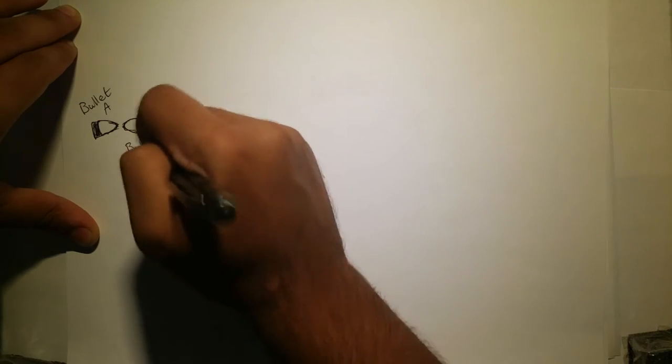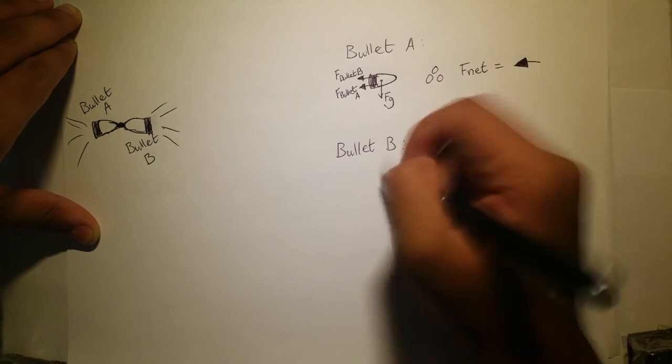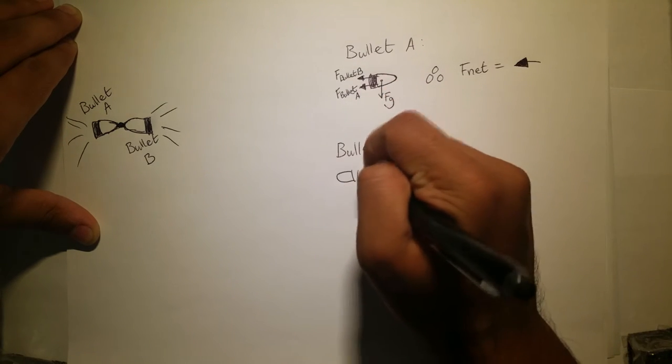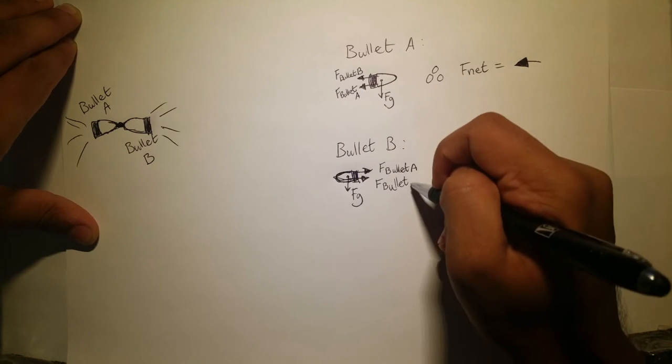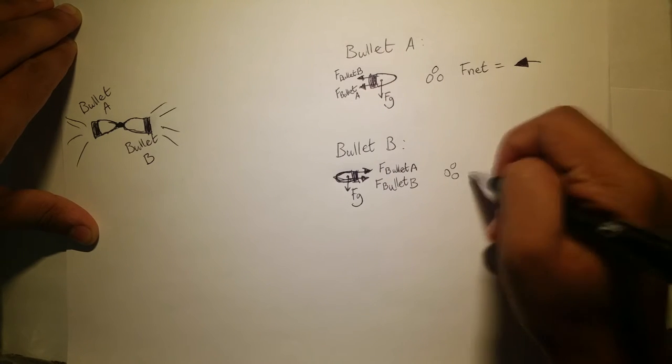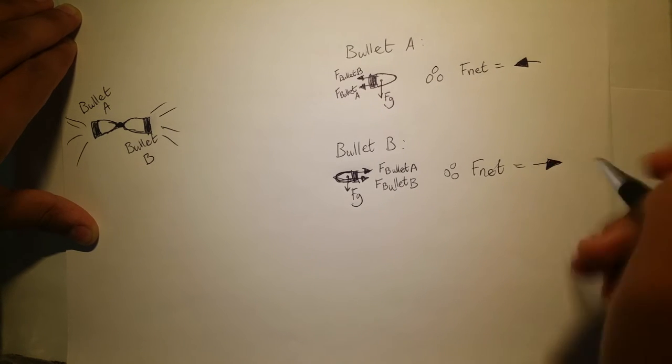Let's call this bullet A and that bullet B. Bullet A would apply a force on bullet B and feel an equal force acting on it in the opposite direction. Well, the same would be true for bullet B. The net force acting on the bullets would be in the opposite direction from which they came.